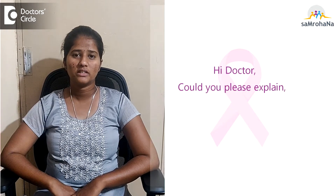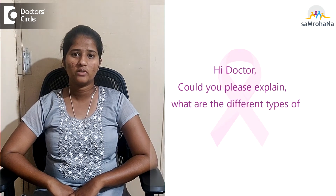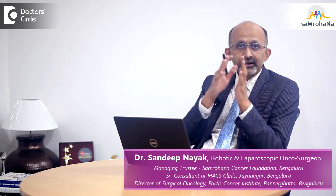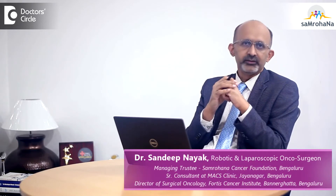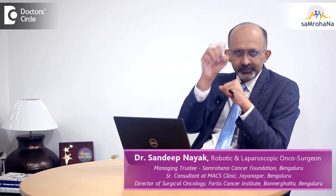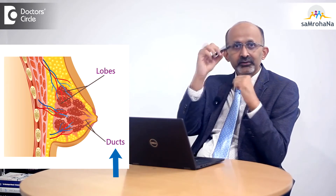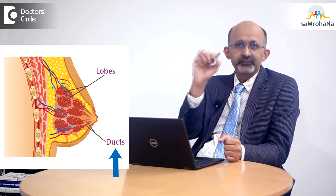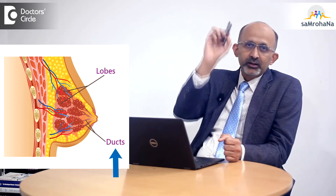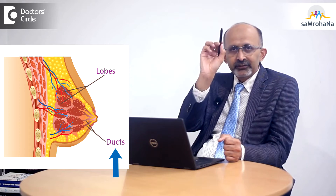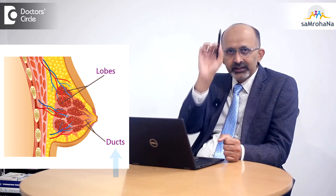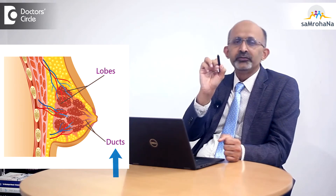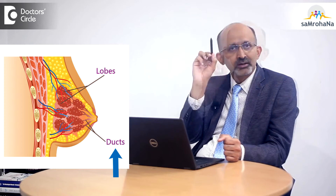Hi Doctor, could you please explain what are the different types of breast cancer? Breast cancer can arise from various components of the breast. It could be the duct, which is a structure that conveys milk from the lobules or glands where it is formed to the nipple. The cancer that forms in the duct is the most common form, called ductal carcinoma.